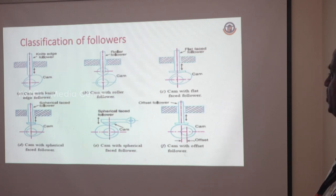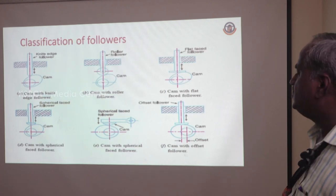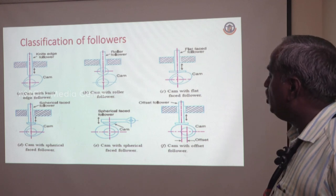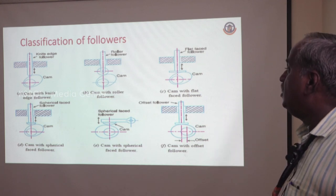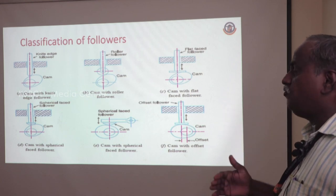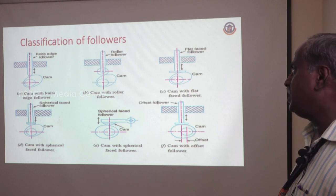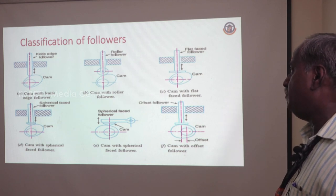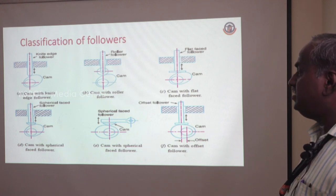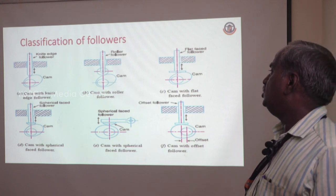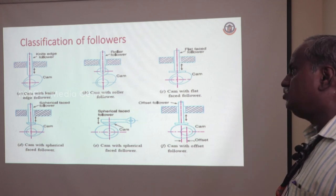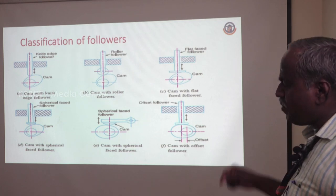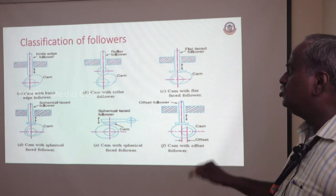Diagram A explains how the knife-faced follower is attached to the CAM. The edge of the follower is in the shape of a knife. It will have only reciprocating motion — up and down movement. The attachment between the CAM and follower is maintained by the spring mechanism. The spring ensures that the follower is always positioned over the CAM, so that whatever projection is available in the CAM is traced by the follower, and in turn the follower does some useful work to the attached mechanism. In the knife-faced follower, the same single point is always in contact, so there will be more wear and tear.